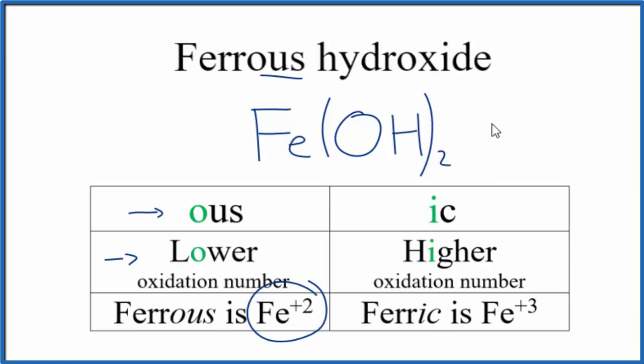This is the formula for ferrous hydroxide. You can also call it iron 2 hydroxide because of the +2. This is Dr. B, thanks for watching.